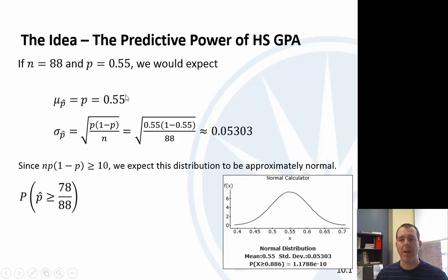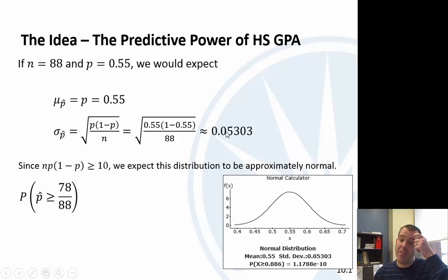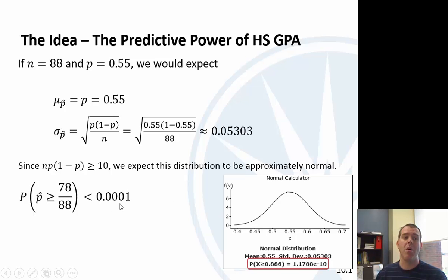I've got that mean — I'd expect the population mean of 0.55 and the standard deviation for the sample proportion. You can see this probability is so small it hardly even registers. Think about it: 78 over 88 is almost 0.9. The standard deviation is 5%, so we are many standard deviations away. That probability is basically zero — it's so small we'll just say it's less than 1 in 10,000. So if we did 10,000 random samples of 88 students, fewer than 1 of those samples would have a success rate of 78 over 88. That is really, really unusual.